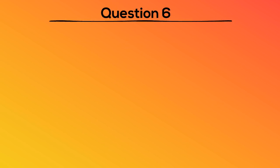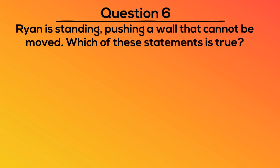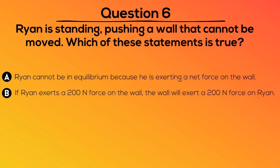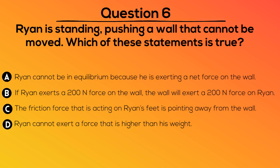Question 6. Ryan is standing, pushing a wall that cannot be moved. Which of these statements is true? A. Ryan cannot be in equilibrium because he is exerting a net force on the wall. B. If Ryan exerts a 200 newton force on the wall, the wall will exert a 200 newton force on Ryan. C. The friction force that is acting on Ryan's feet is pointing away from the wall. Or D. Ryan cannot exert a force that is higher than his weight.